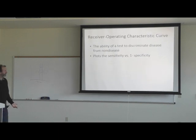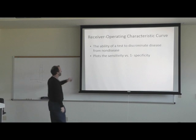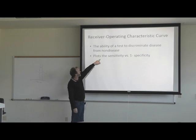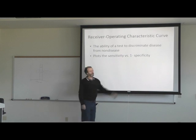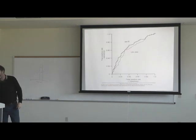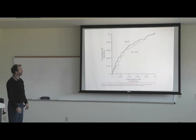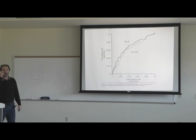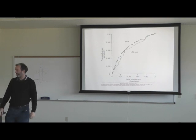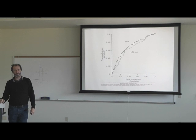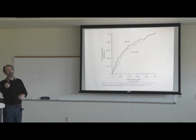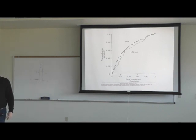Receiver operating characteristic curves describe the ability of the test to discriminate disease from non-disease. They plot sensitivity versus one minus specificity, and you get plots that look curved. You want it curved one way — you don't want straight lines. This is the end of the reference interval chapter.